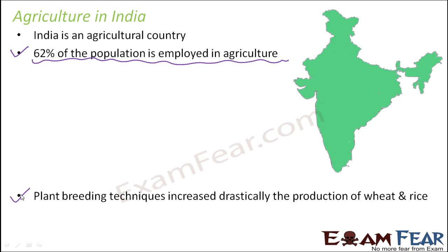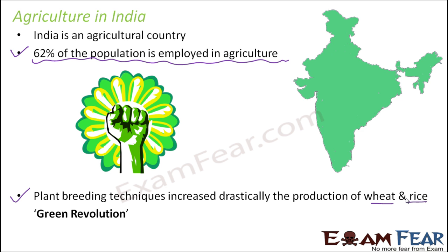Plant breeding techniques were put into place, because of which the production of basic crops like wheat and rice increased drastically. The staple food for most people in India is either wheat or rice, so once the production of these two basic things got increased, people were not starving — people were getting something to eat. Somewhere around the 1960s, this enhancement happened due to the implementation of plant breeding techniques, and it was known as the Green Revolution — a sudden and drastic change.